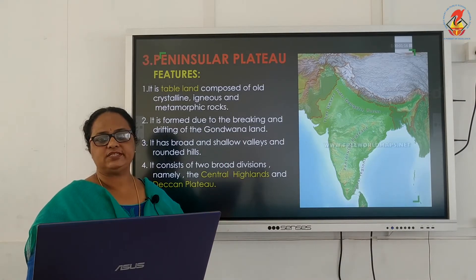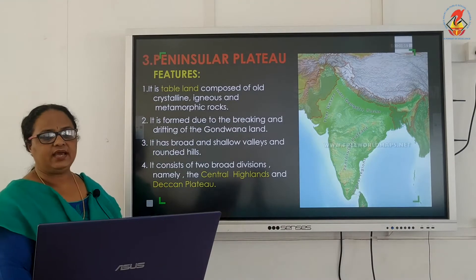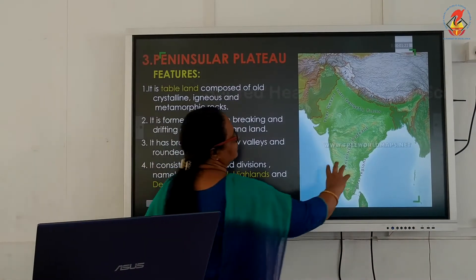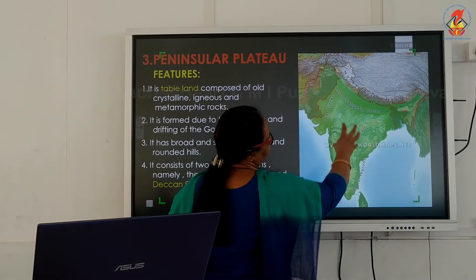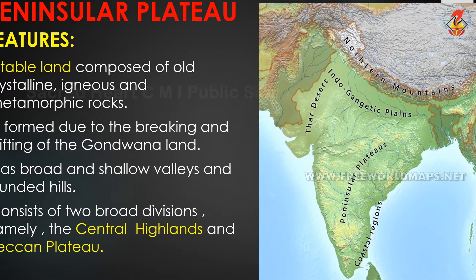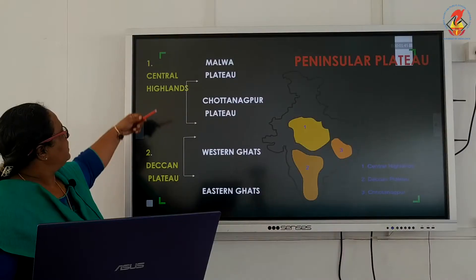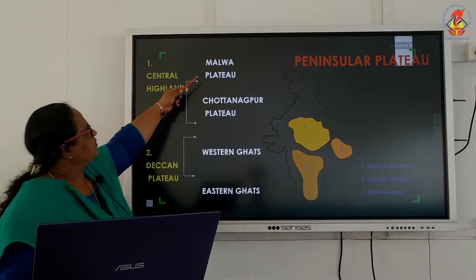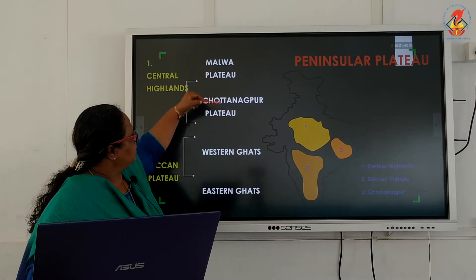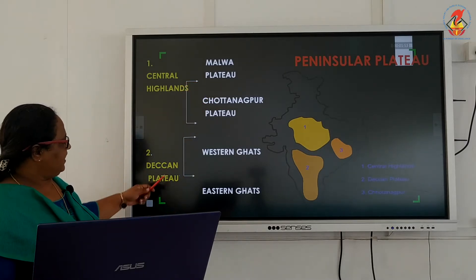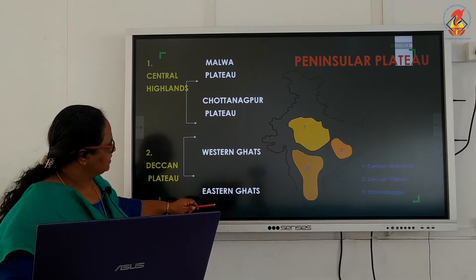The peninsular plateau is divided into two parts: the central highlands and the Deccan plateau. The central highlands are further divided into the Malwa plateau and Chotanakpur plateau, while the Deccan plateau is divided into the western ghats and the eastern ghats.